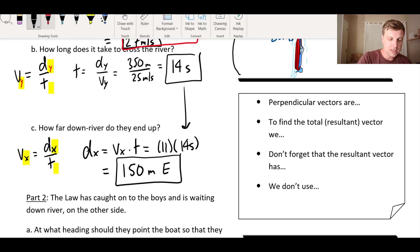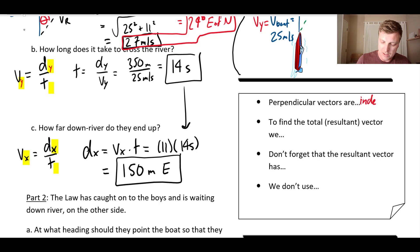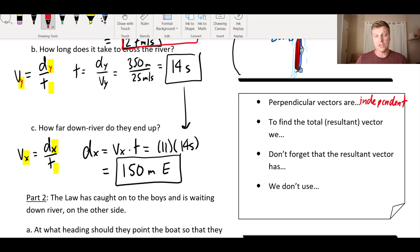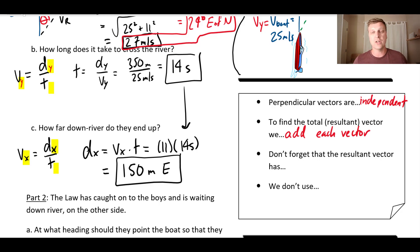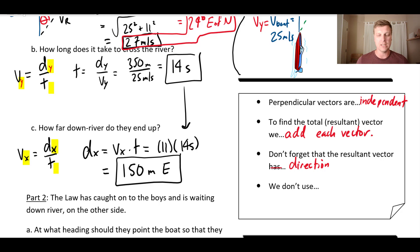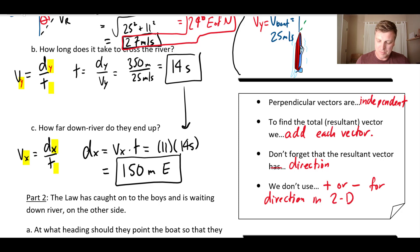A couple of reminders: perpendicular vectors are independent — I've said that about nine times but it's super important. To find the total resultant vector, we add each vector using vector addition, and in two dimensions that means Pythagoras and trigonometry. Don't forget that each resultant vector has a direction, and in two dimensions you must use an angle — not just plus or minus. Plus and minus works in one dimension, but in two dimensions there are infinitely many possible directions, so we need to be more specific.